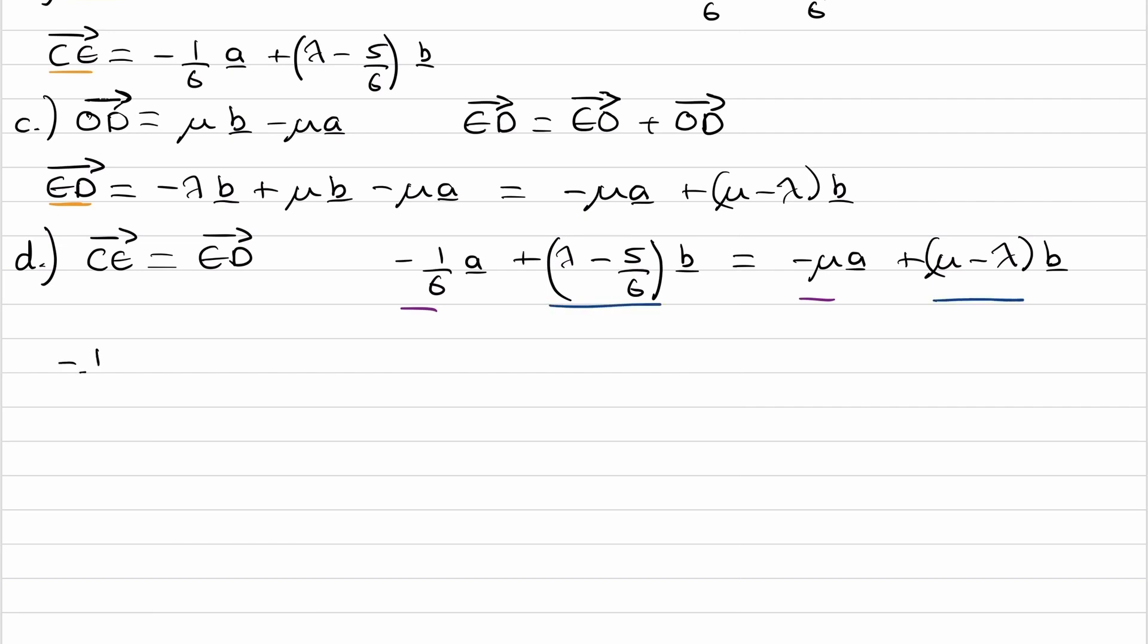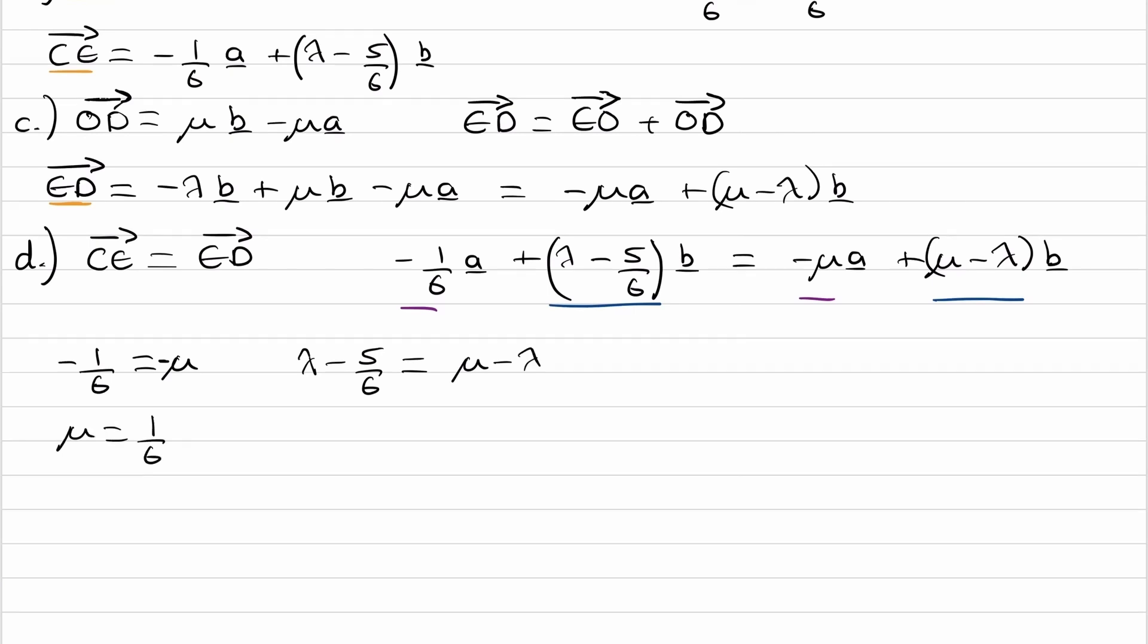So then we end up with minus a sixth is equal to mu, that's the coefficients of a. Oh, that should be minus mu. And then for the coefficients of b, we get lambda minus five over 6 is equal to mu minus lambda. So from this we get mu is a sixth. Rearrange this and put in the mu is equal to one over six.